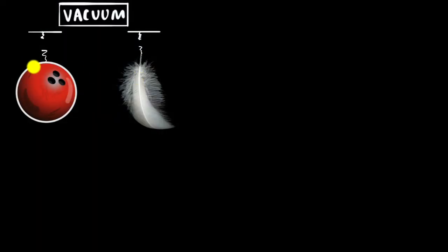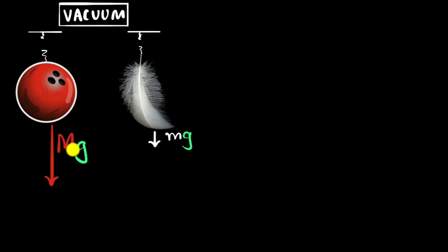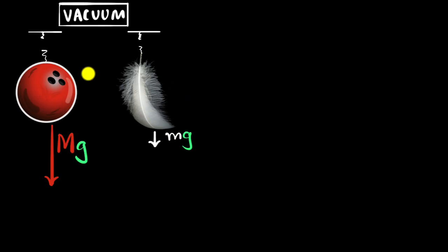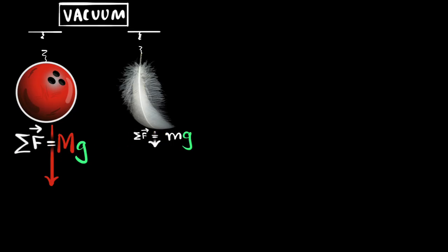When we drop them in the vacuum, just after releasing them, let's write down the forces acting on each object. There is gravitational force acting downwards, given as mg, where m is the mass of the object and g is the acceleration due to gravity close to Earth — about 9.8 meters per second squared. Because the bowling ball has a much higher mass, it has a stronger force of gravity compared to the feather. There is nothing else acting on them — remember, it's in vacuum, so there are no air molecules, no air resistance. This is the only force acting on them, which means this is the net force.